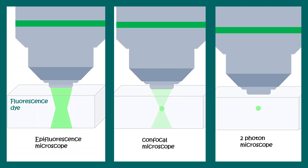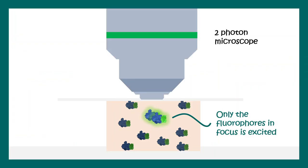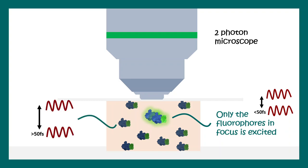We don't need a pinhole in two photon microscopy because only points at focus are illuminated. Here, only fluorescently labeled proteins at the focal plane emit fluorescence. Proteins outside the focal plane do not illuminate anything because they experience the two laser pulses with a time gap greater than 50 femtoseconds — meaning the pulses are not coinciding. Only at the focal spot do the laser pulses almost coincide and give rise to the two photon process.